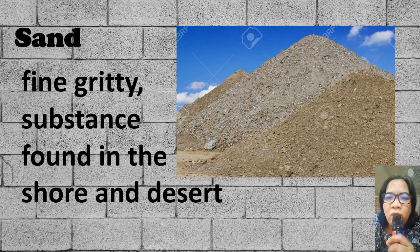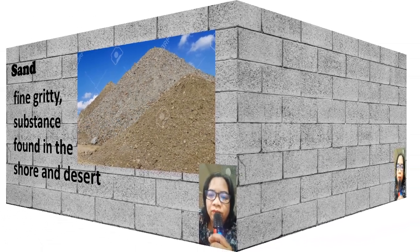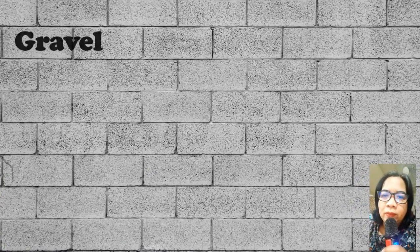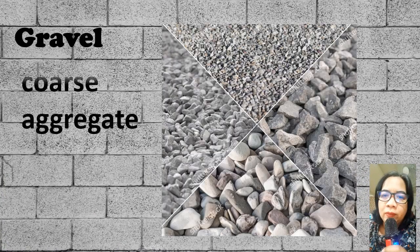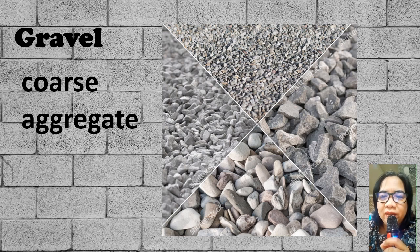Sand is a fine aggregate found in shore and desert. Gravel is a coarse aggregate.